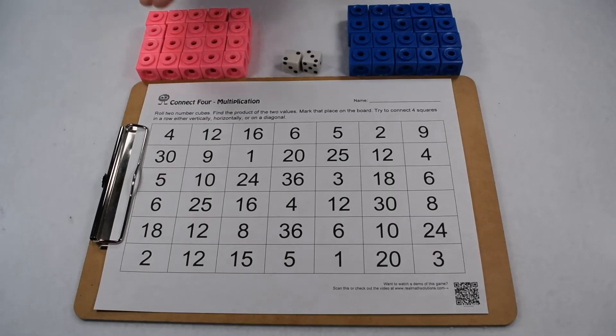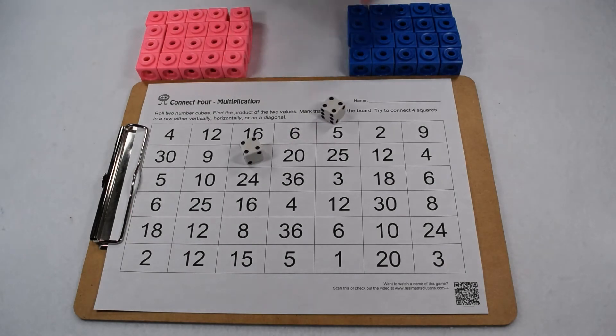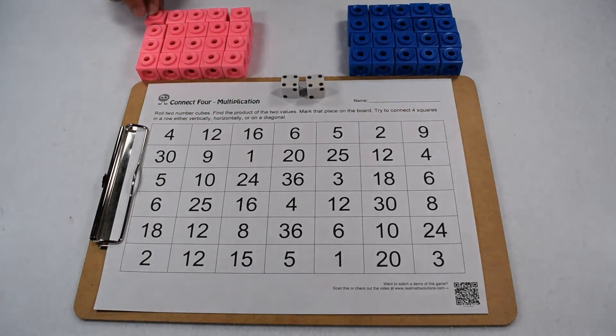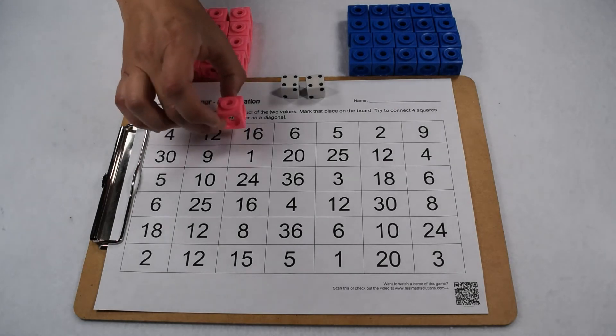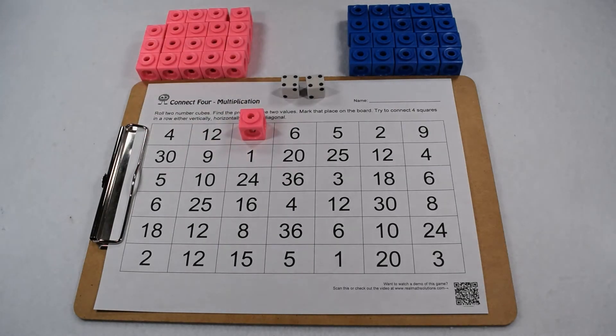Let's take a look at how to play. We're going to start with our pink player. They're going to be player one. They're going to take our two number cubes and roll them. They rolled a four and a four, so we need to multiply four times four together and get 16. They're going to take one of their markers and put it on one of the 16s on the board.